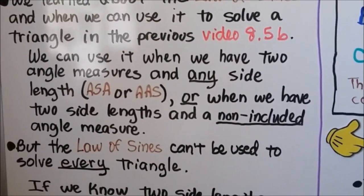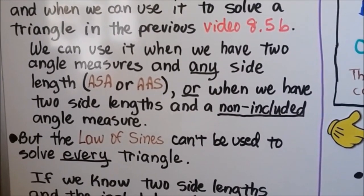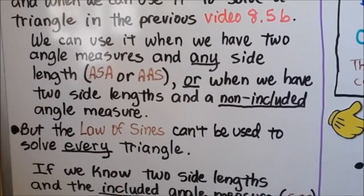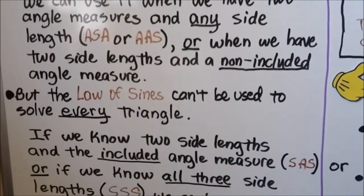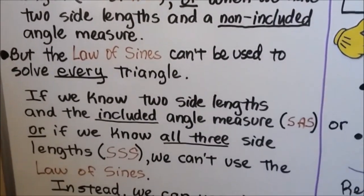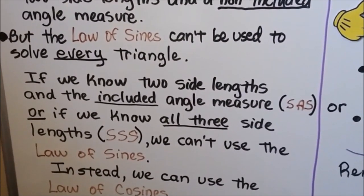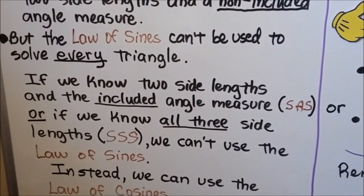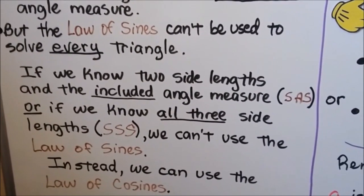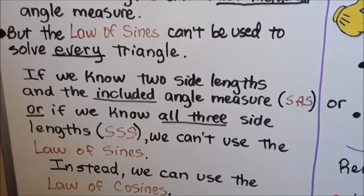We can use the law of sines when we have two angle measures and any side length — ASA or AAS — or when we have two side lengths and a non-included angle measure. But the law of sines can't be used to solve every triangle. If we know two side lengths and the included angle measure SAS, or if we know all three side lengths SSS, we can't use the law of sines. Instead, we can use the law of cosines.